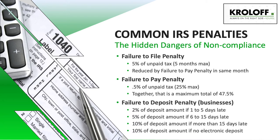The failure to deposit penalty applies to businesses which do not make their regular deposits on time. For this penalty, there's a sliding penalty scale ranging from 2% to 10%, depending on when the deposit is actually made. And if the deposit is not made electronically as required, a 10% penalty can be assessed for that as well.